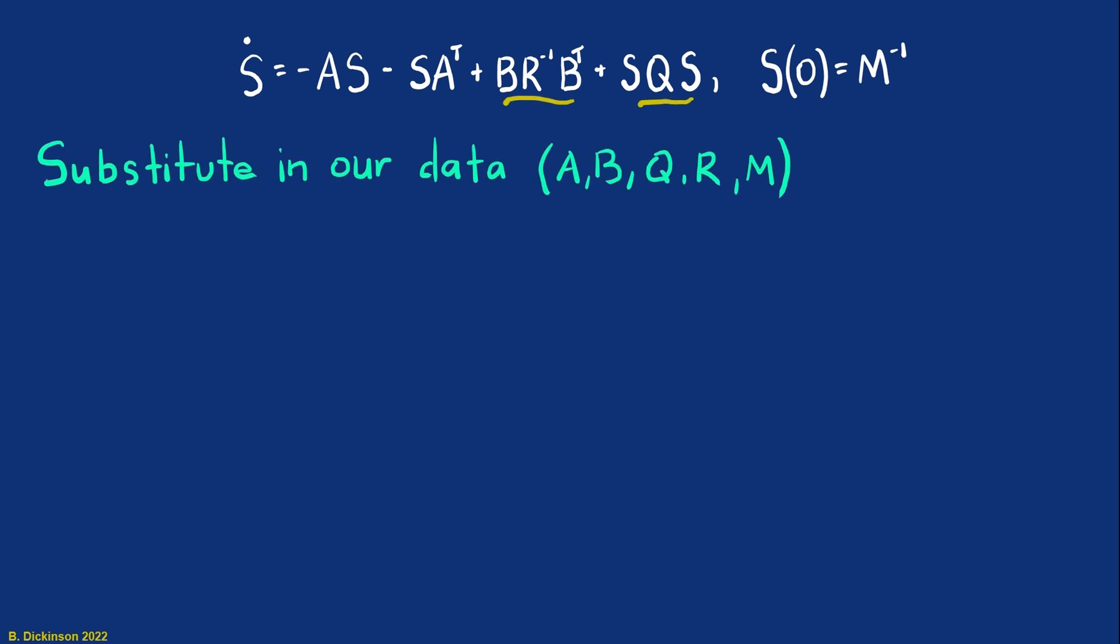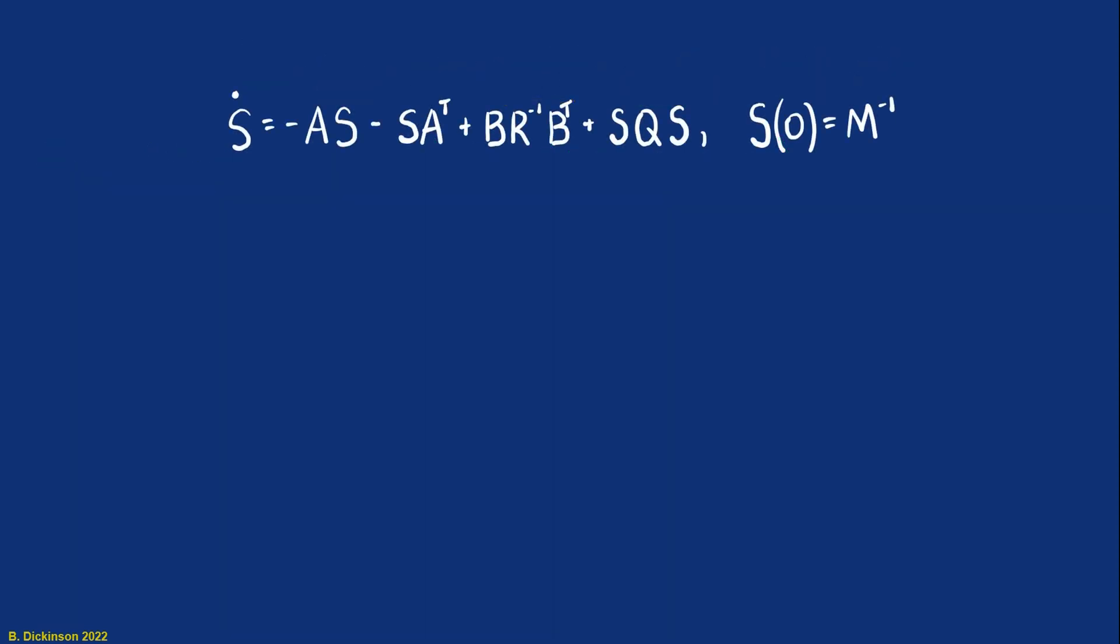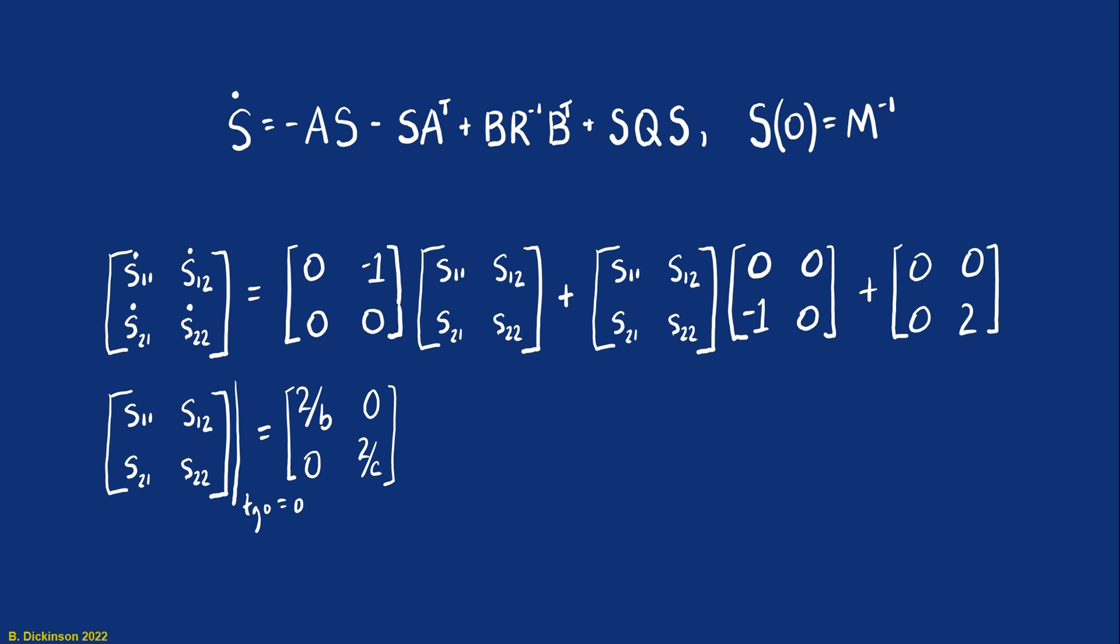So now let's substitute in our data. And to start, we'll just work on these two terms. The first term, pretty easy. Q is zero, so that goes away. The second term, B, R inverse, B transpose. Let's, here's R and B. And then inserting the rest of our problem data, we can see the individual elements of what becomes our Lyapunov equation.